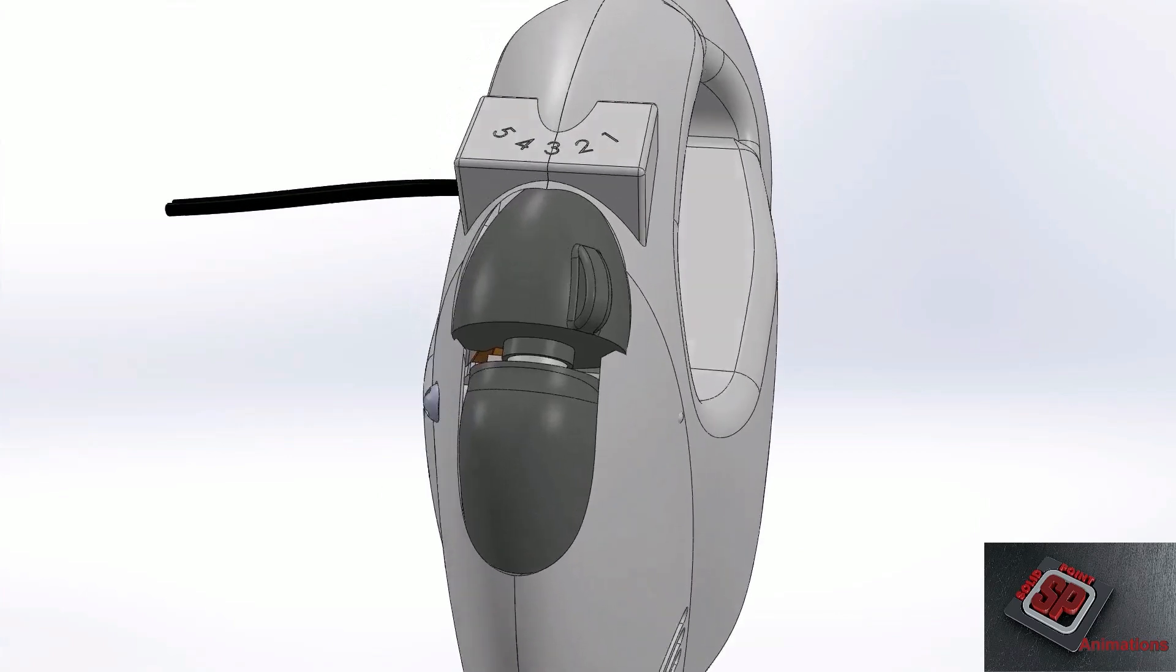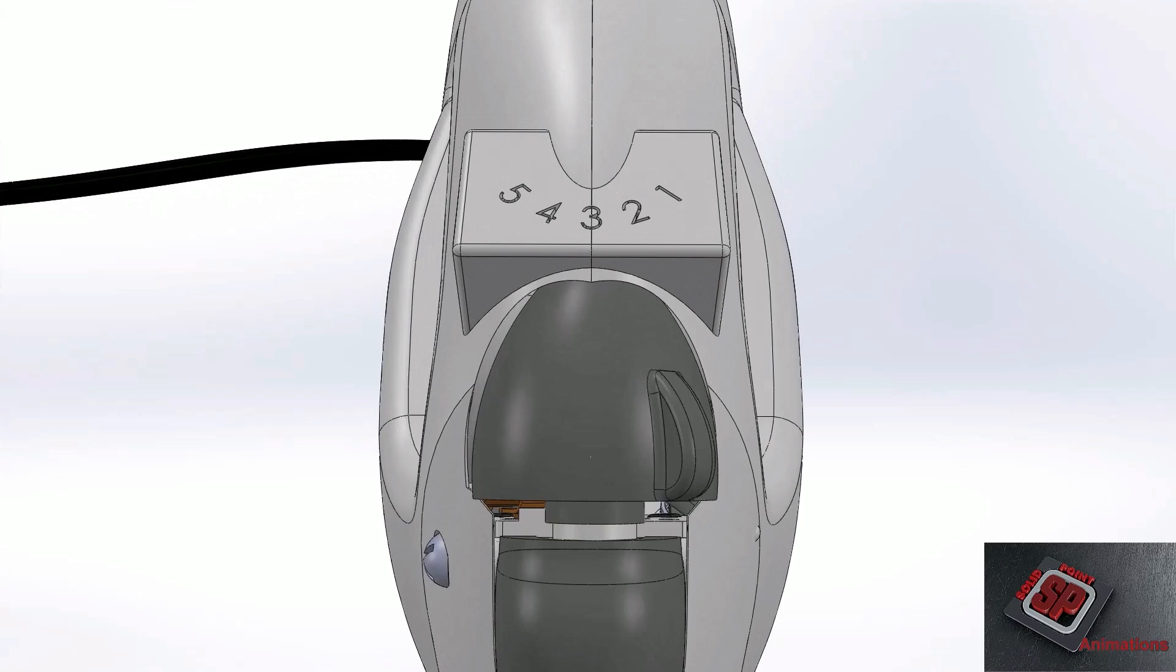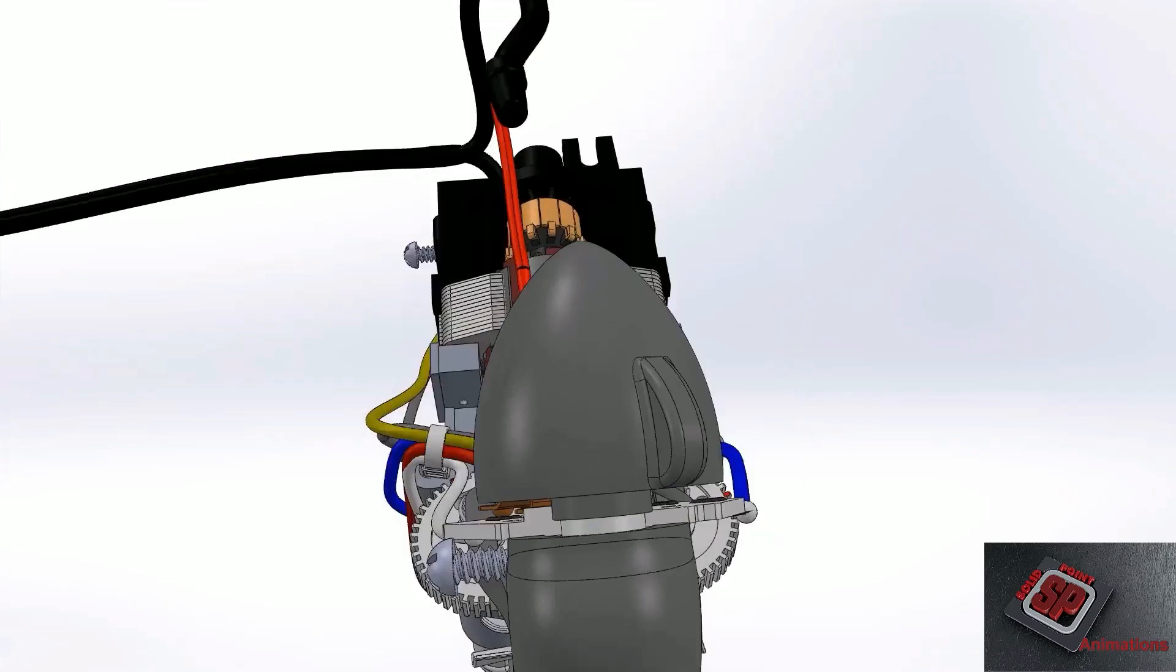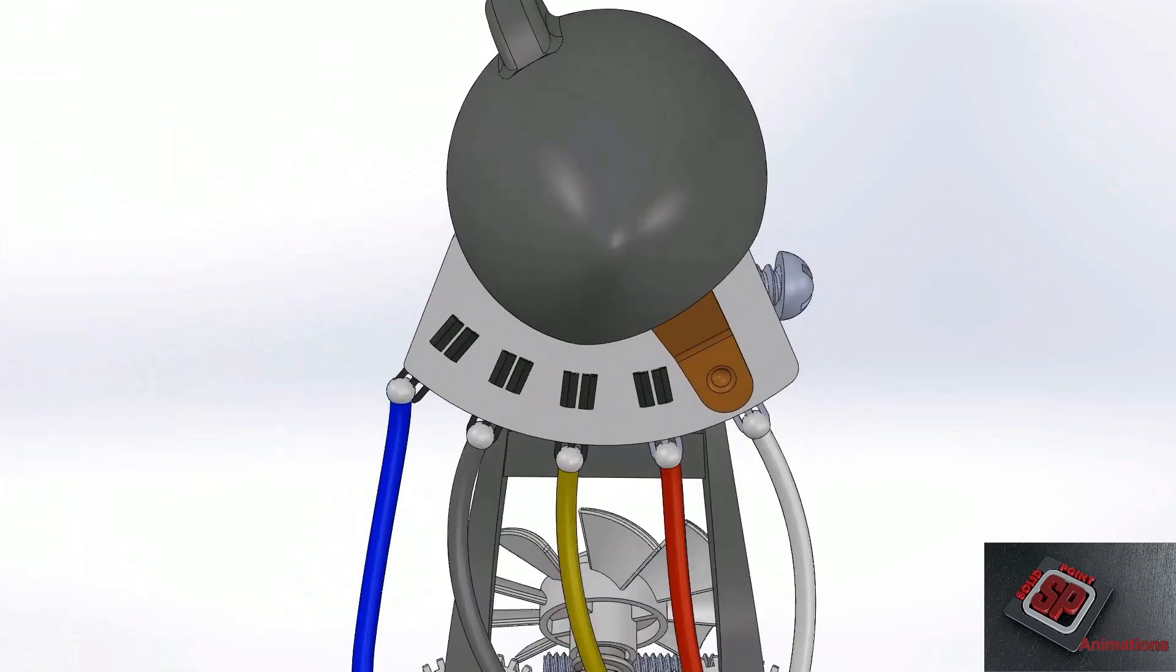Now to what I consider the coolest part of the hand mixer: the speed control mechanism. This is the speed control switch. It is a dial that can be swung back and forth to speed up or slow down the hand mixer, position one being the slowest and position five being the fastest. As you can see, when the speed control switch is rotated, a copper connector attached to it will move over these copper contacts.